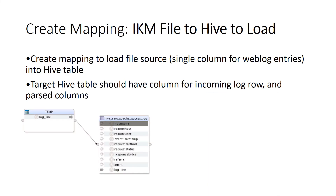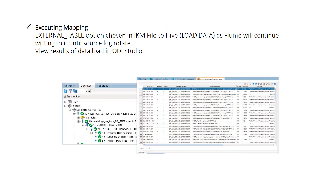Use RKM Hive to reverse-engineer the column definitions from Hive; do the same for the file. Once both models are created, you can build the mapping using the source and target. As shown on screen, the source is a file and the target is a Hive table. Map your source attributes to the target, then go to the Physical tab and select the IKM as IKM File to Hive. Also make sure to select the external table option in the IKM, as it will continue writing until the source log rotates.